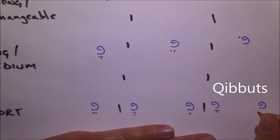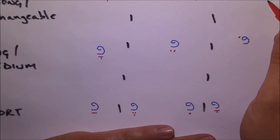And our last one in the U class is our kibbutz which is three dots in a downward diagonal slash and this is our oo sound very much like the shurek.